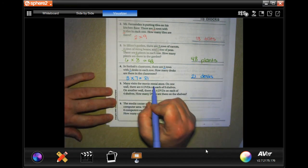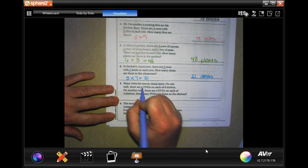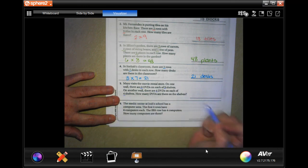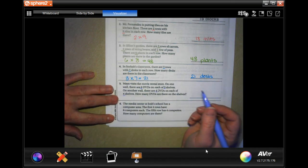Okay, Maya visits the movie rental store. On one wall, there are six DVDs on each of five shelves. On the other wall, there are four on four shelves. How many DVDs are there on the shelf?